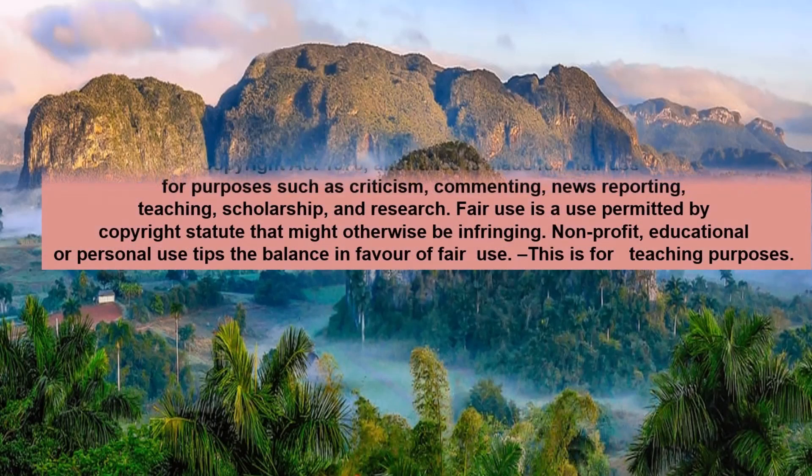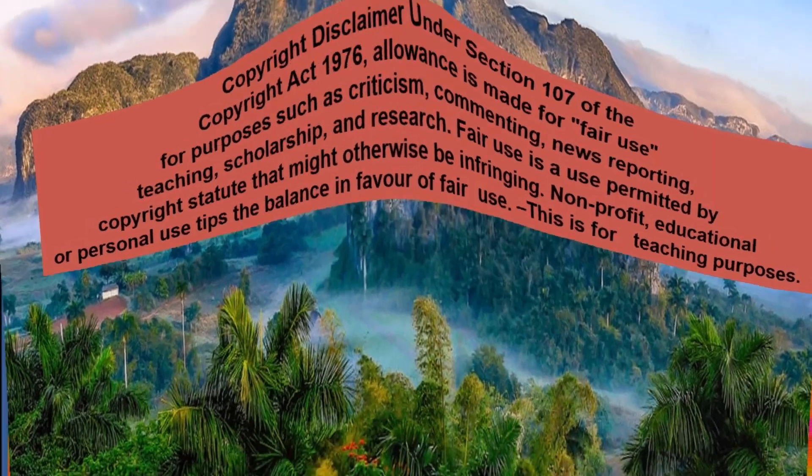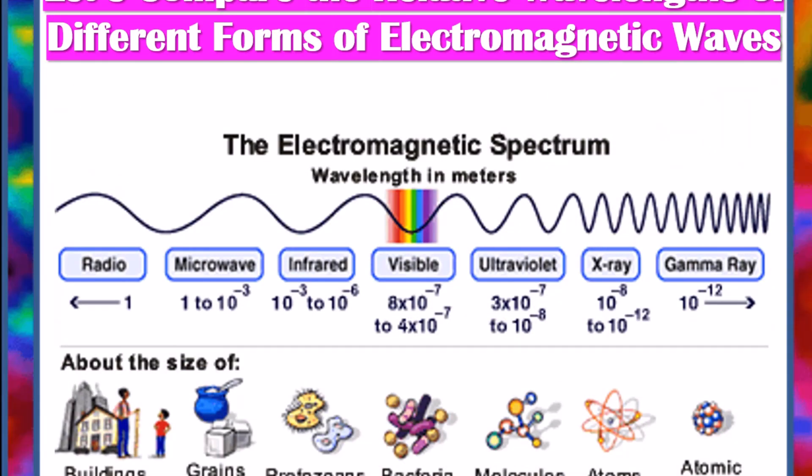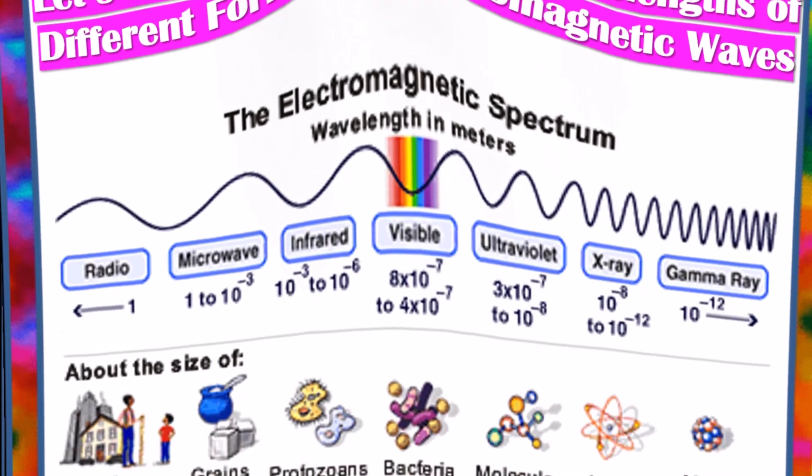The electromagnetic spectrum includes, from longest wavelength to shortest: radio waves, microwaves, infrared, optical, ultraviolet, x-rays, and gamma rays.